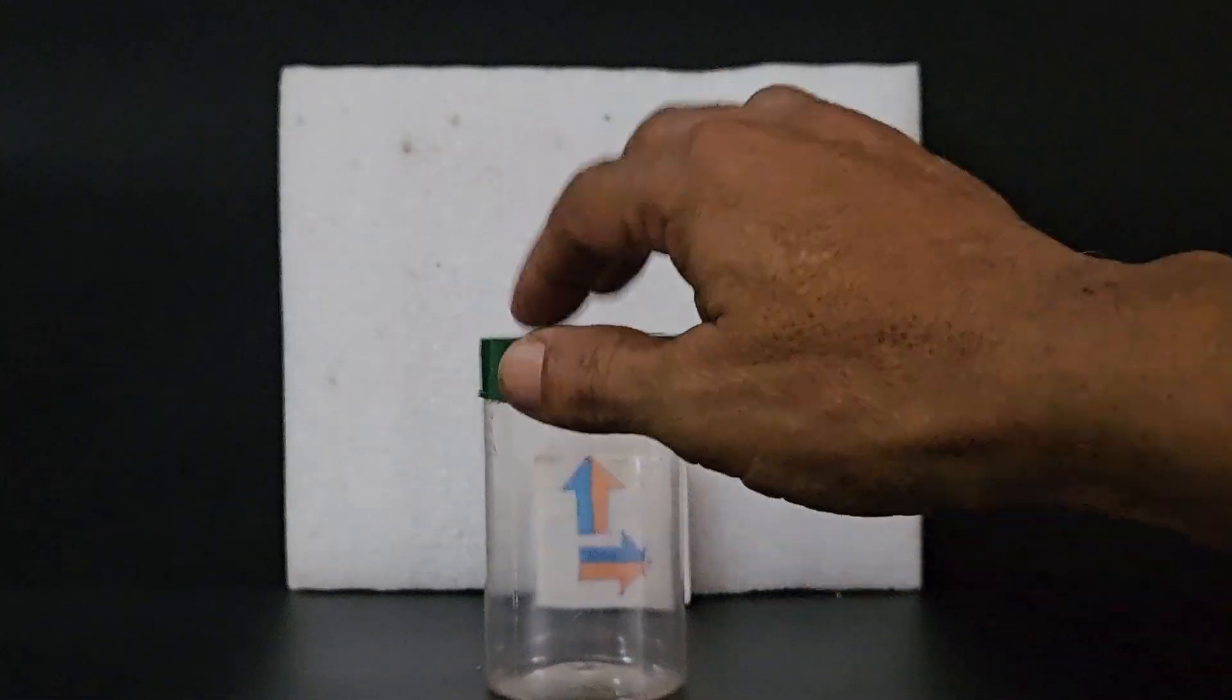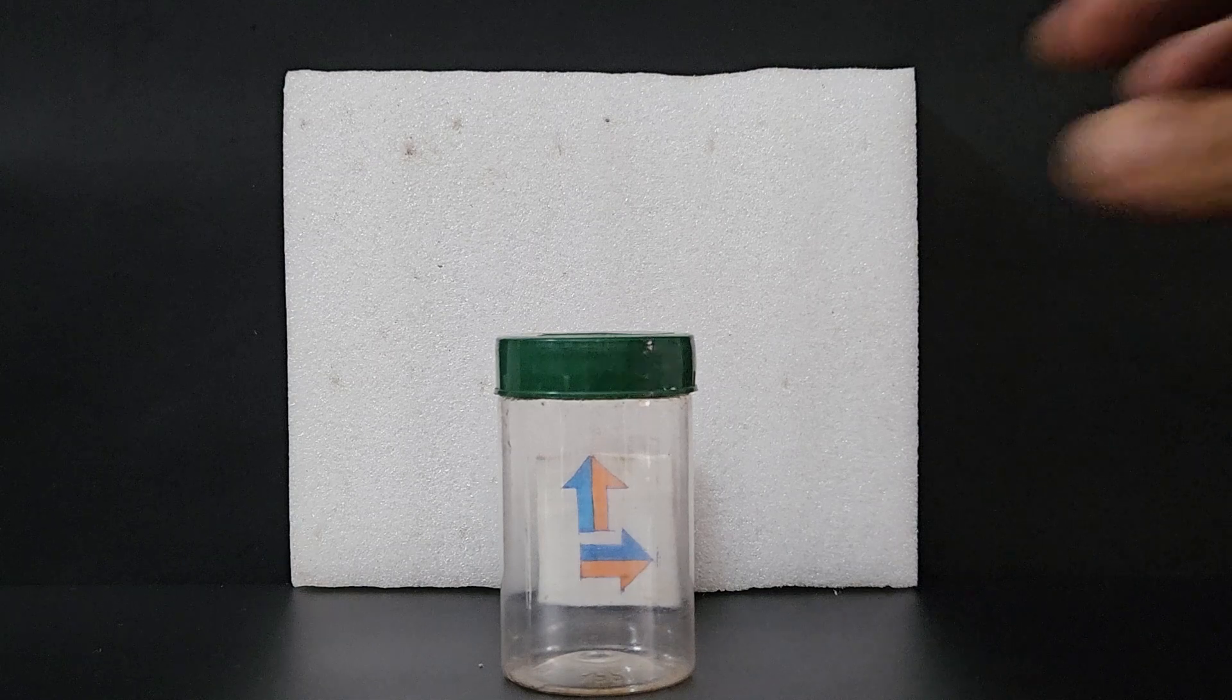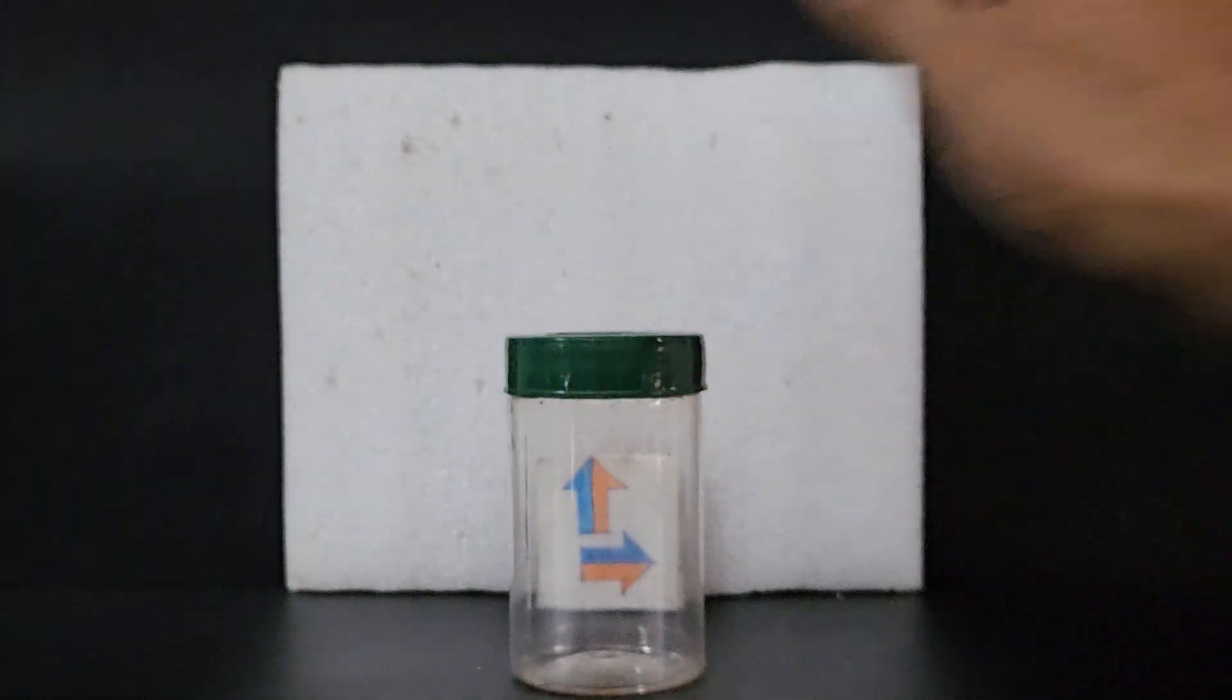When I keep this container in between the arrows and the camera, do you see any difference? Nothing has changed, right? It looks the same without the container and with the container.